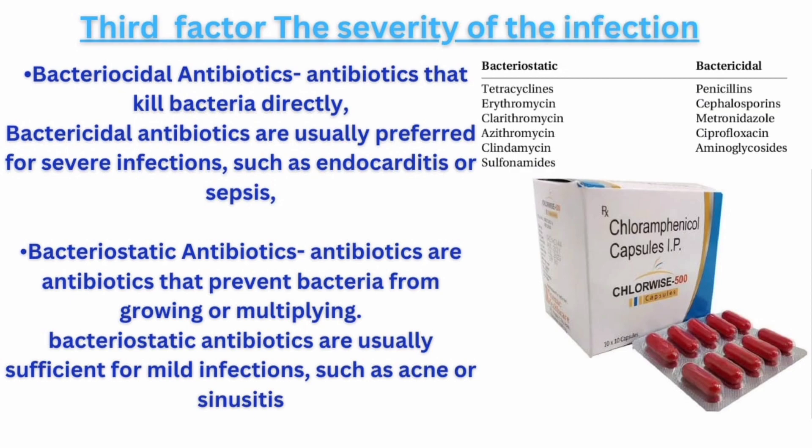The third factor to consider is the severity of the infection. Some infections are mild and can be treated with oral antibiotics at home, while others are severe and require intravenous antibiotics in the hospital. The choice of antibiotic depends on how quickly and effectively it can kill or stop the bacteria. Bactericidal antibiotics kill bacteria directly, while bacteriostatic antibiotics prevent bacteria from growing or multiplying. Bactericidal antibiotics are usually preferred for severe infections such as endocarditis or sepsis, while bacteriostatic antibiotics are usually sufficient for mild infections such as acne or sinusitis.